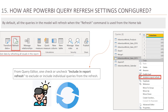Question 15: How are Power Query refresh settings configured? By default, all queries in the model will refresh when the Refresh command is used from the Home tab. Refresh functionality is supported in Power Query — when you import datasets externally, it can be done manually using the Refresh Now option, or set up using Scheduled Refresh. It is recommended to exclude queries that don't change often, like lookups or static data tables. From Power Query Editor, you can check or uncheck Include in Report Refresh to exclude or include individual queries from the refresh.